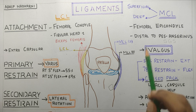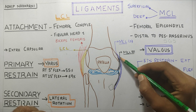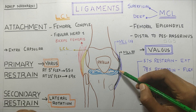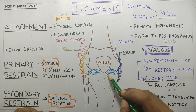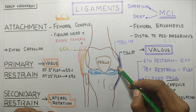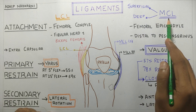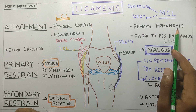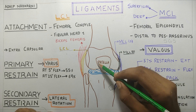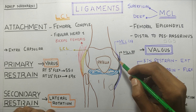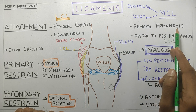To begin with, MCL has a superficial and a deep layer. This is the superficial layer and this is the deep layer. The deep layer of MCL is attached to the meniscus through the meniscofemoral ligament. The proximal attachment of MCL is to the femoral epicondyle. The condyle is the articulating surface and the epicondyle is the region above the condyle where all the attachments take place.